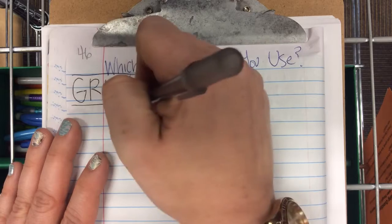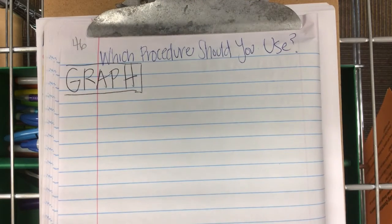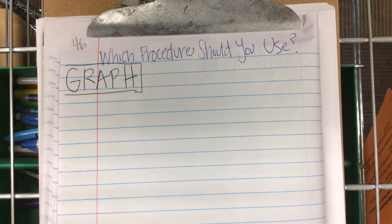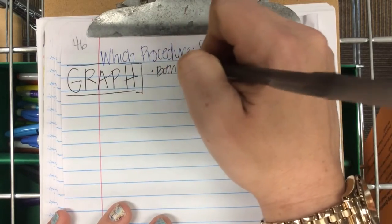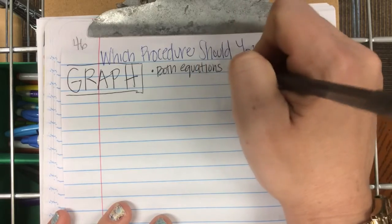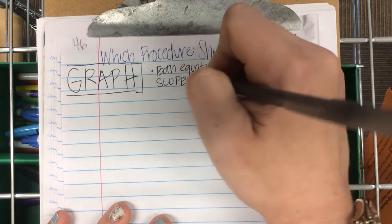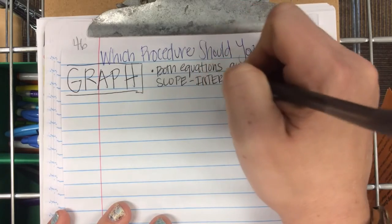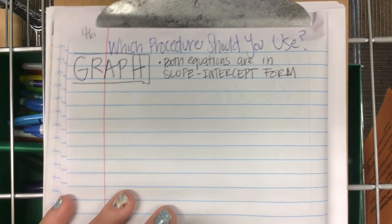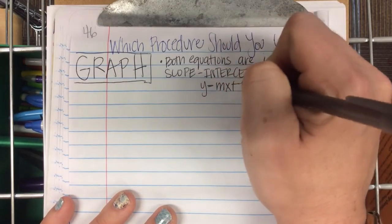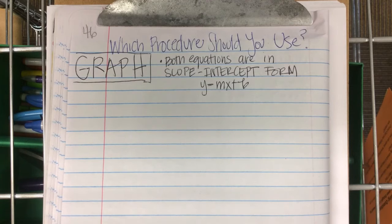When should you graph an equation? What characteristics would a system have if you should graph it? Both equations are in slope-intercept form, which is y equals mx plus b. If both of them are written in y equals mx plus b, you should probably graph it.